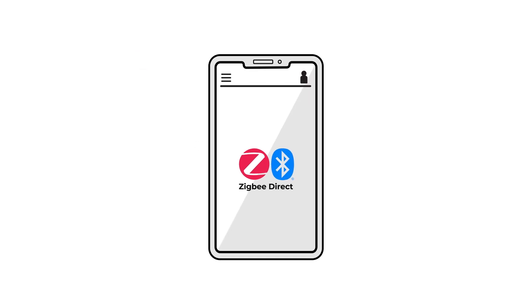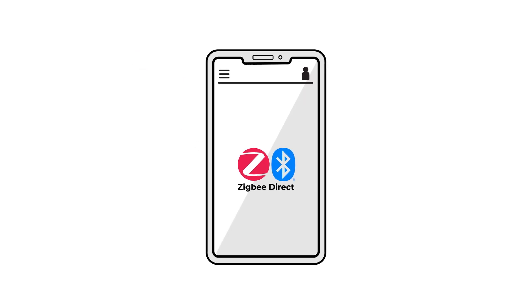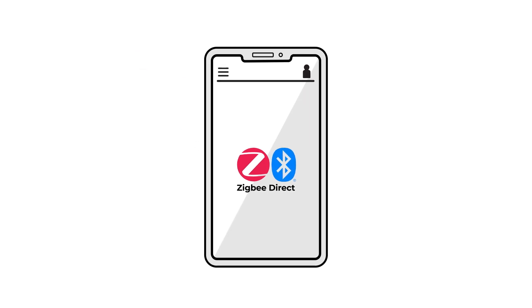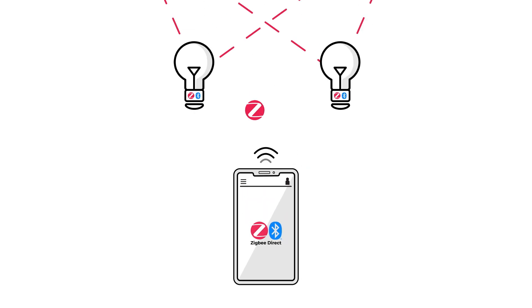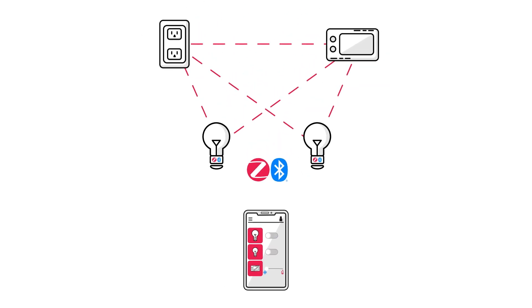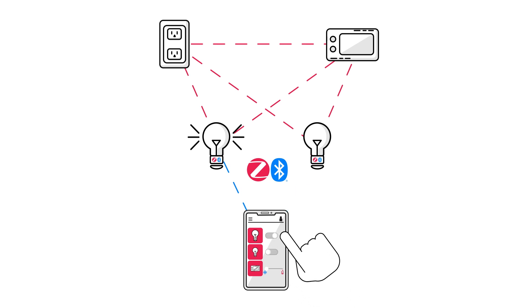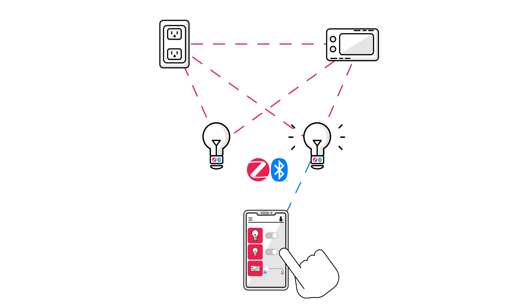With Zigbee Direct, users can also utilize a Zigbee virtual device, such as a phone or smart speaker, to securely connect to an existing Zigbee network to control devices on that network.